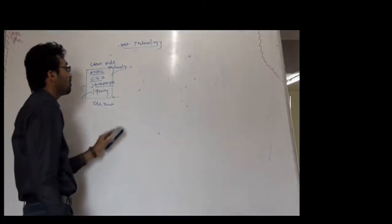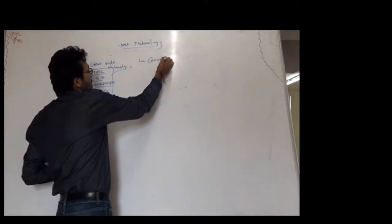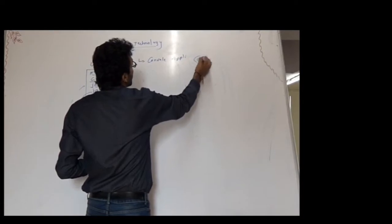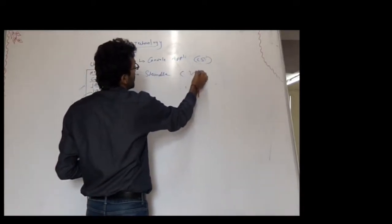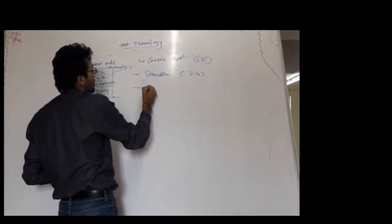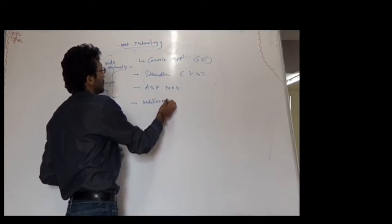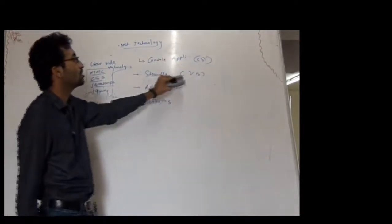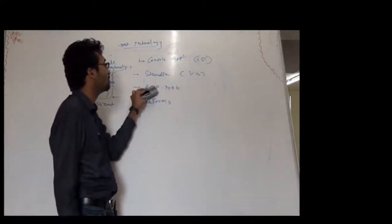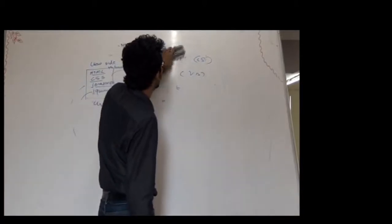When using the .NET platform for application development, what are the options? You might create console applications using C# programming, standalone applications that run on a single machine using Visual Basic, or web applications using ASP.NET. You might also create applications called web forms. If you want a console application, use C#; standalone application, use VB; web application, you have two choices — ASP.NET or web forms.